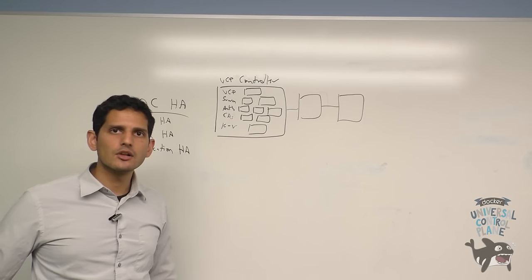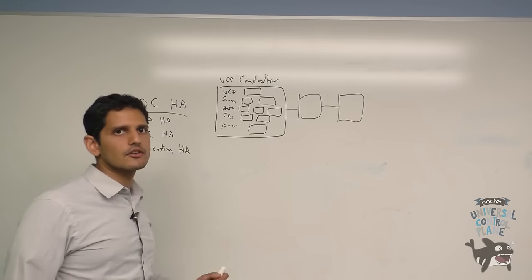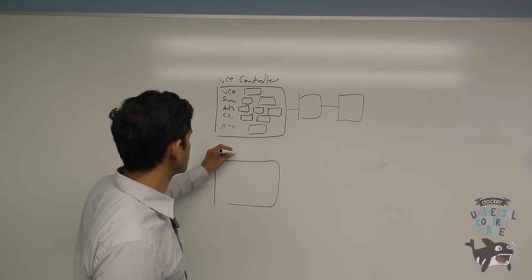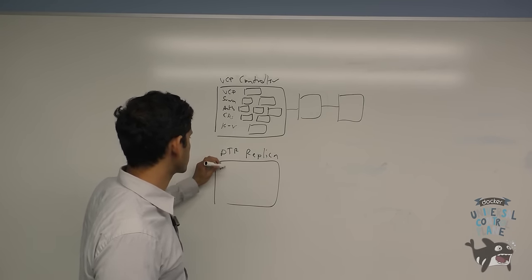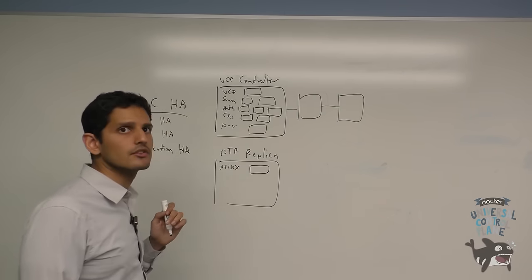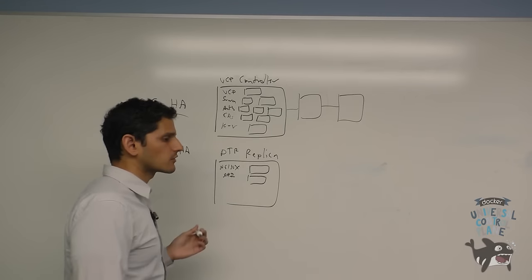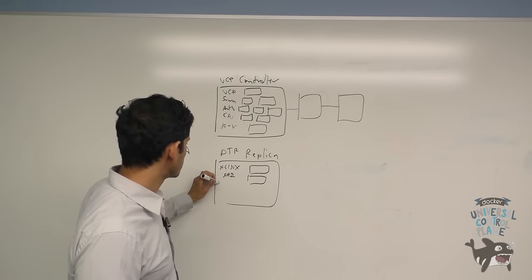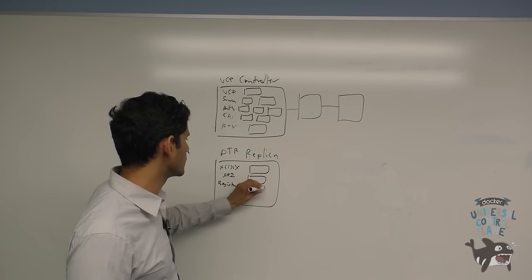Now we're going to talk about high availability for your Docker-trusted registry deployment. A single instance of Docker-trusted registry is known as a replica. Each DTR replica consists of a series of containers. The first is an NGINX container, which is used for load balancing requests across the various components of a DTR instance. The second is the API front-end container, and this is what provides actual API and CLI and UI access for both users and admins. Then finally, there's the registry container, and this provides the actual registry functions based off of the open source products.